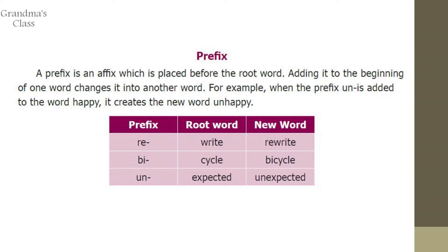Let's give you an example. The prefix 'Re', root word is 'write', the new word is 'rewrite'. Another example: prefix is 'bi', root word is 'cycle', the new word is 'bicycle'. The same way, root word is 'expected', the prefix is 'un', so you get 'unexpected'.